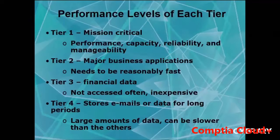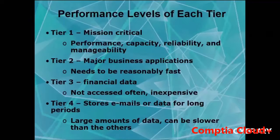Tier 2 is for major business applications — it needs to be reliable and fast. Speed is important, but the reliability of having information available when needed is also critical. Tier 3 is for financial data — it's not accessed often, but when it's needed, access is essential. The information sits ready on the side, but it won't be accessed frequently.